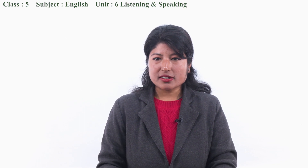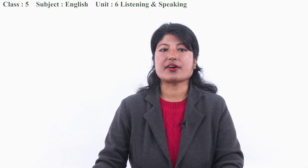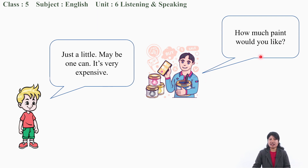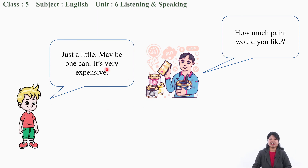One more dialogue I have here. Let's practice. You can practice this in pairs with your friend. One can ask: 'How much paint would you like?' And another friend can answer: 'Just a little. Maybe one can.' One can is one bottle, one can. It's very expensive. You can practice this dialogue with your friends.